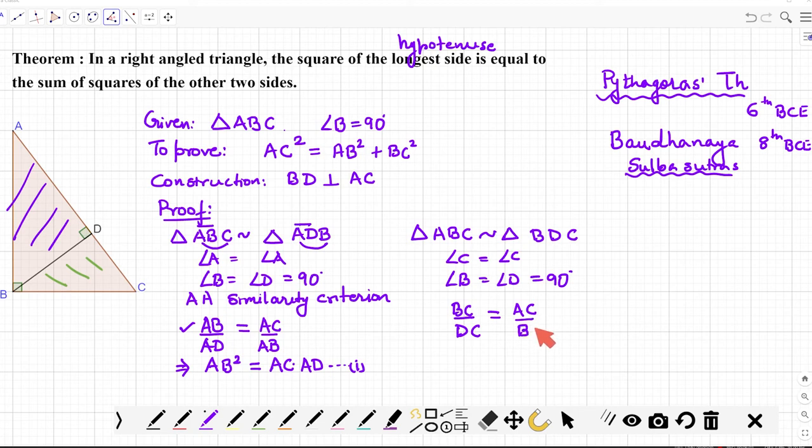So guys, if that is so, then again we can say in this case BC upon DC is equal to AC upon BC. And then rearranging again, you can very easily say what is this? This is nothing but BC² is equal to AC into DC. So this is equation number two.